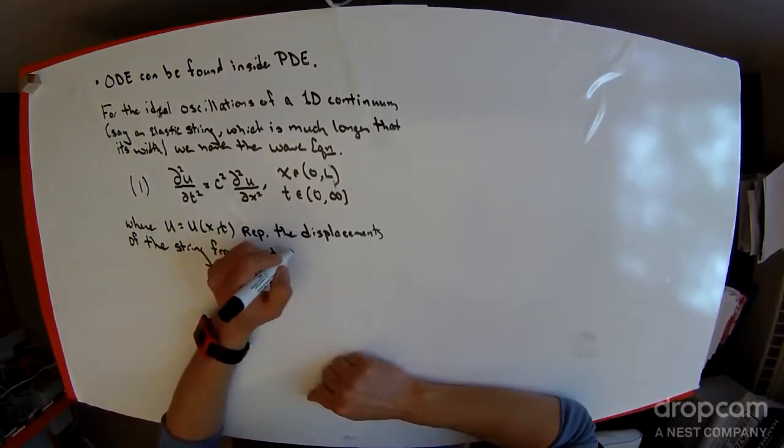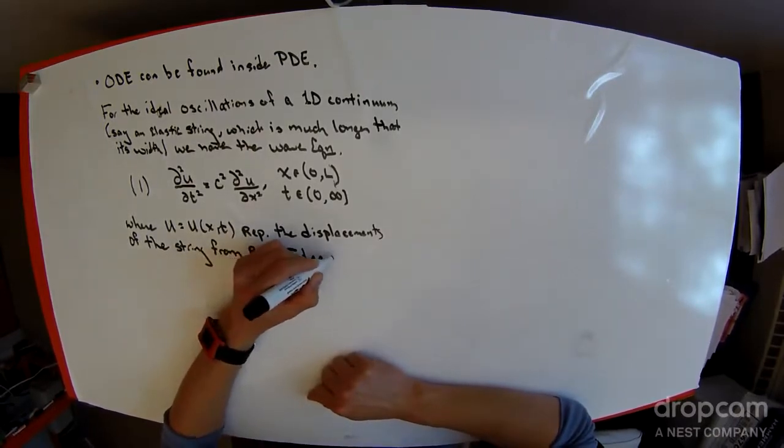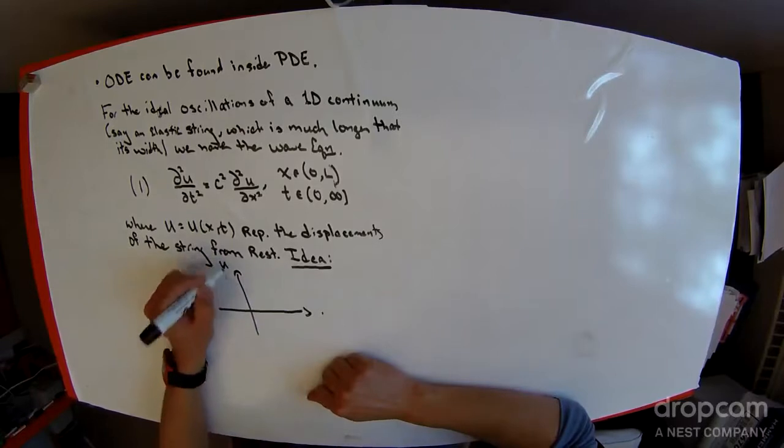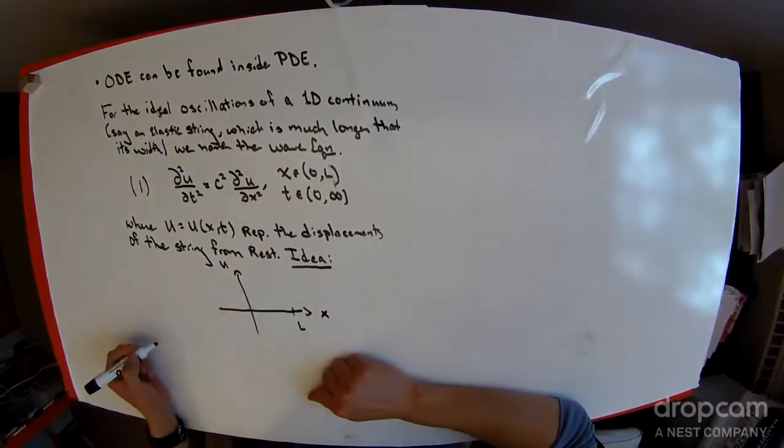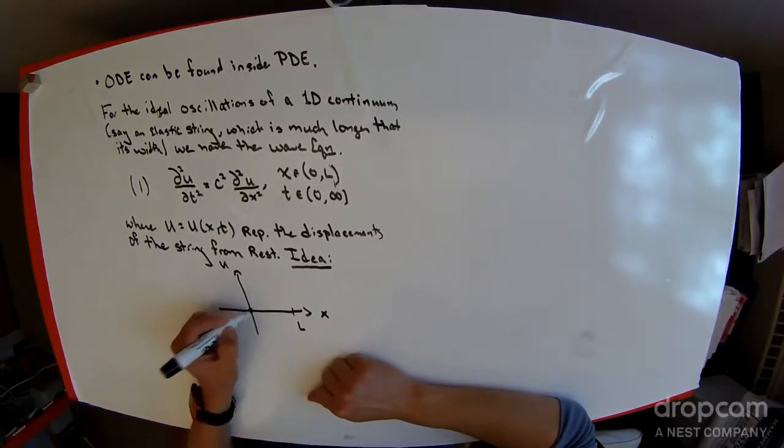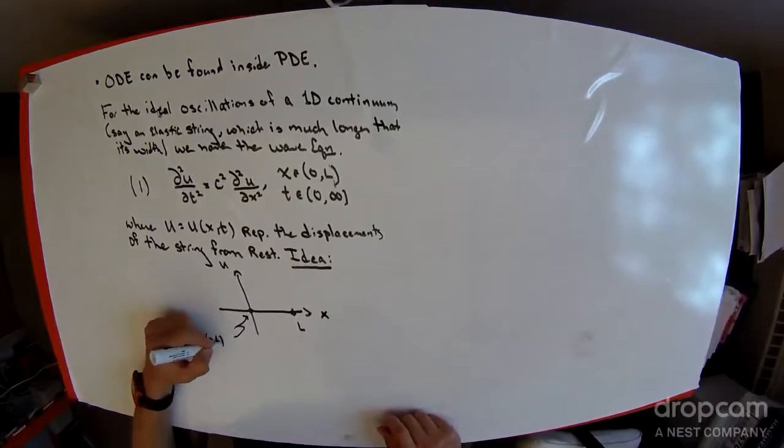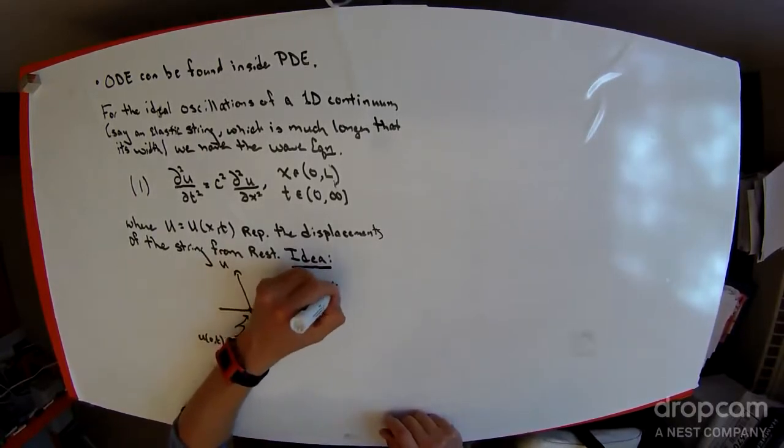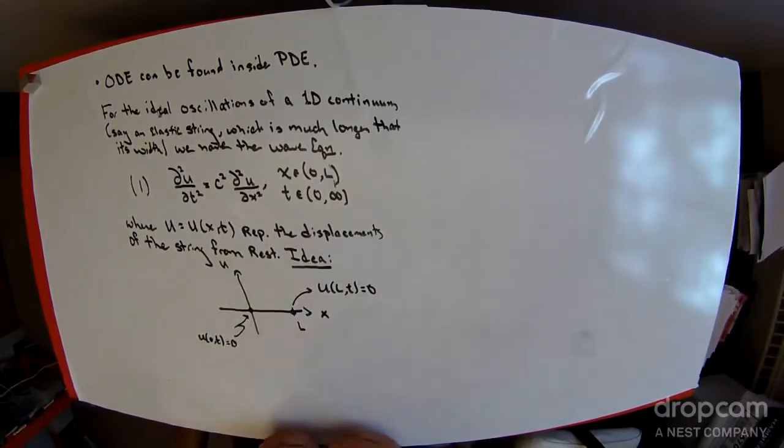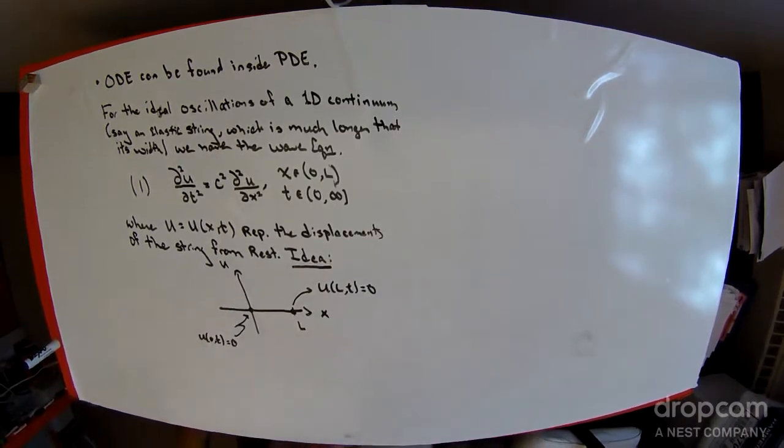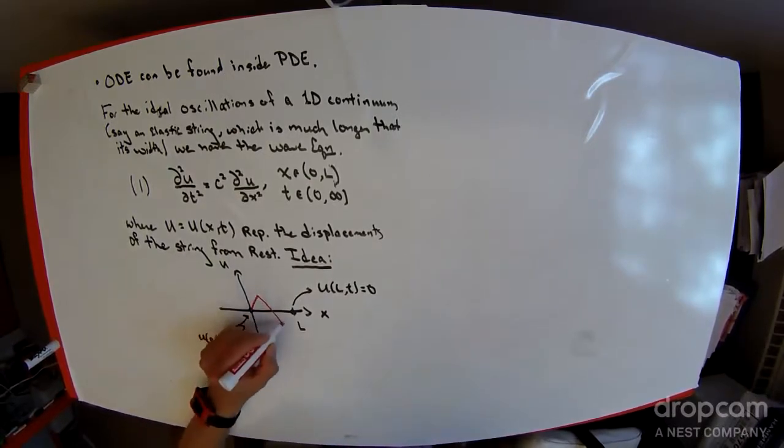Suppose you had some system where u is a function of x, this is length L, and you wanted to fix the boundaries so the string is always touching those two points. That would tell me u(0,t) is always 0 and u(L,t) is always 0. These are boundary conditions saying the displacement at the edge of the string's boundary are fixed. You could think about this as being like a guitar string.